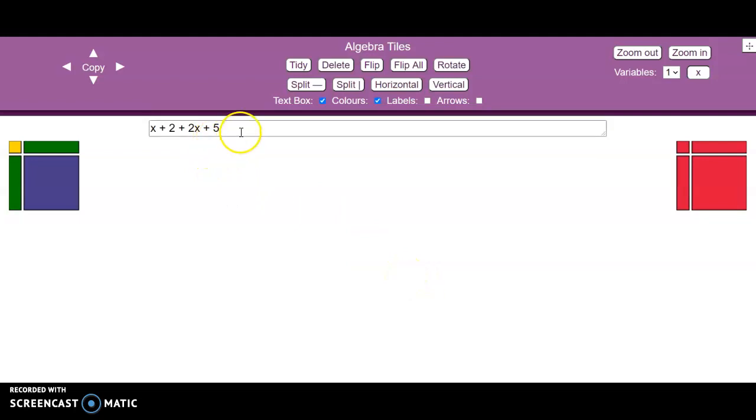And now we've got a mixture of letters and numbers, so exactly the same though. We're going to have an x, we're going to have two units, two 1s. We're then going to have two x, and we're going to have five 1s. So we can use the copy function to increase those.